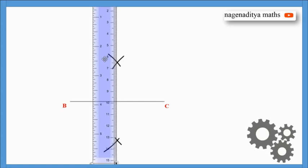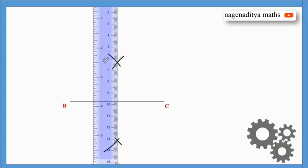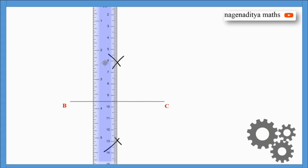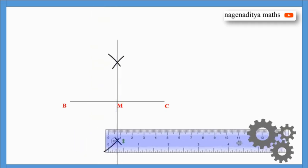Now join the point of intersection of both arcs. We will get a perpendicular bisector of BC, and the perpendicular bisector intersects BC at M.